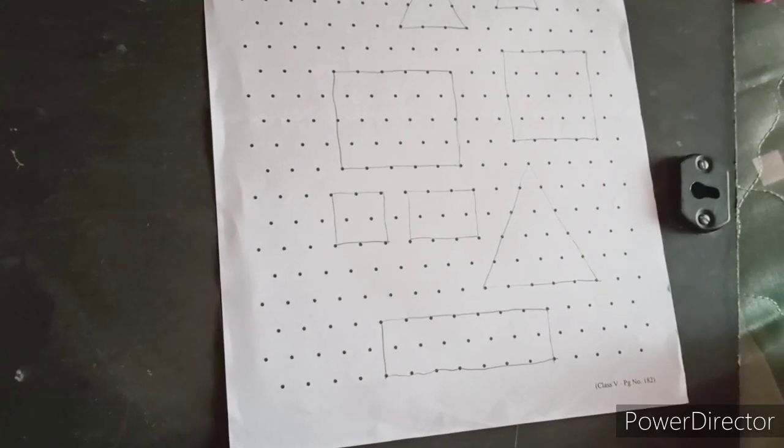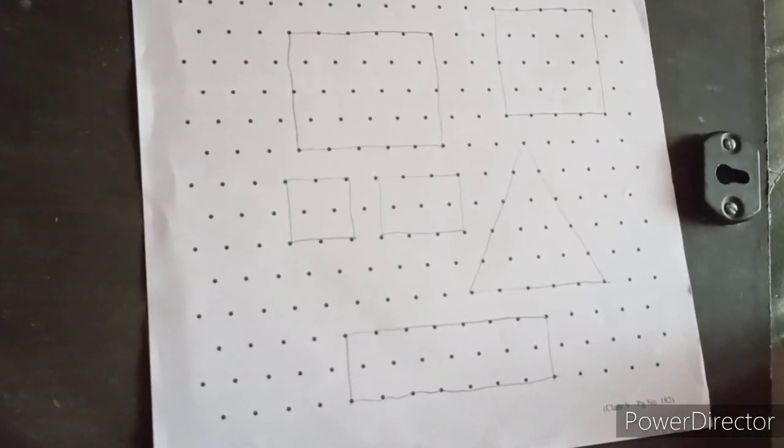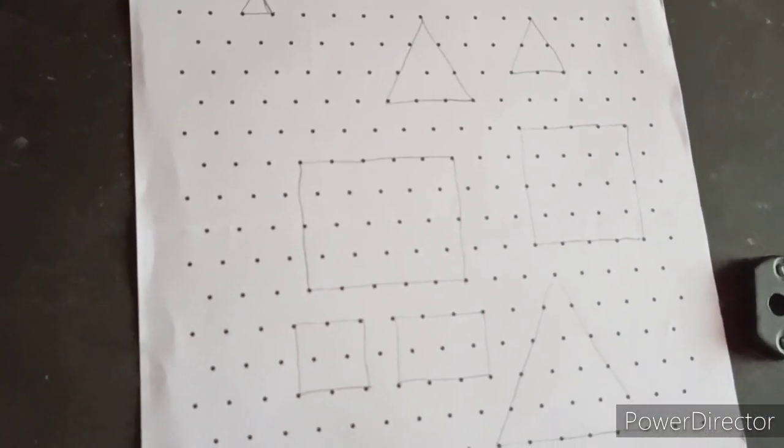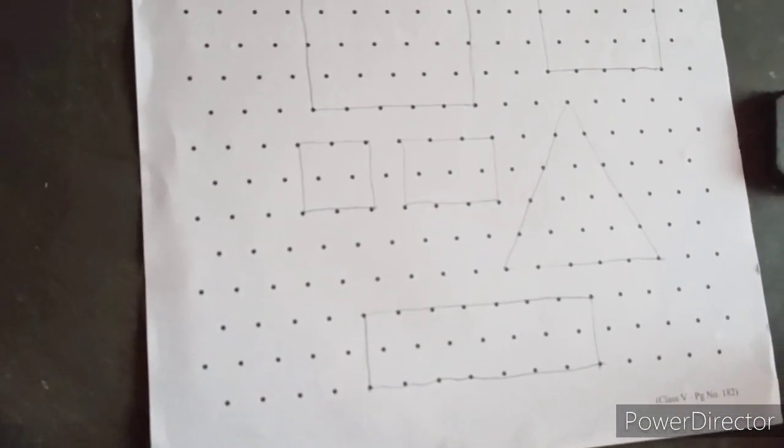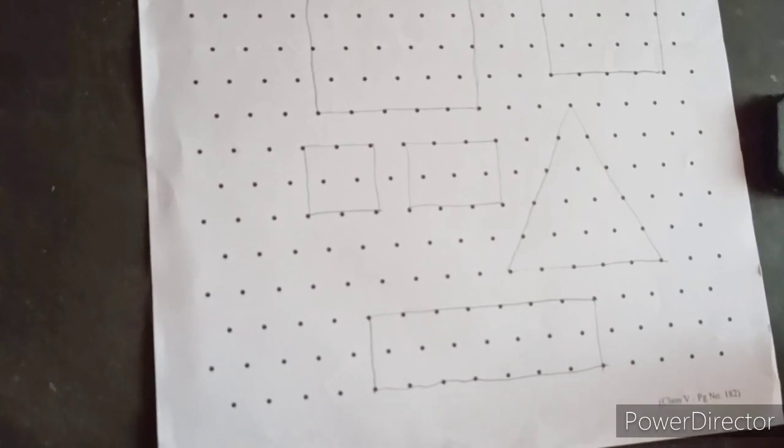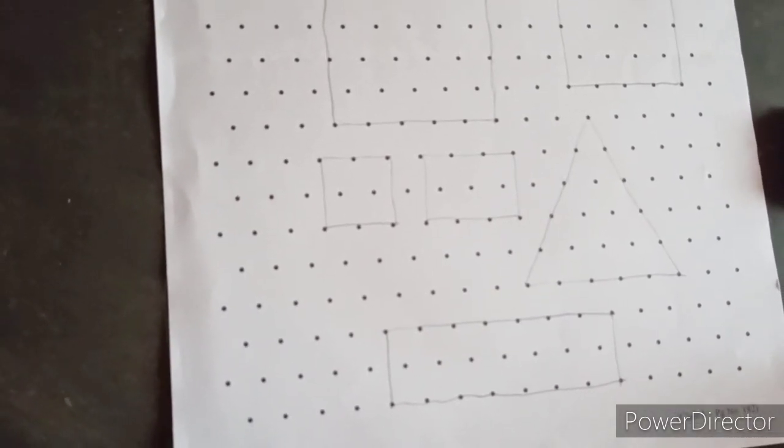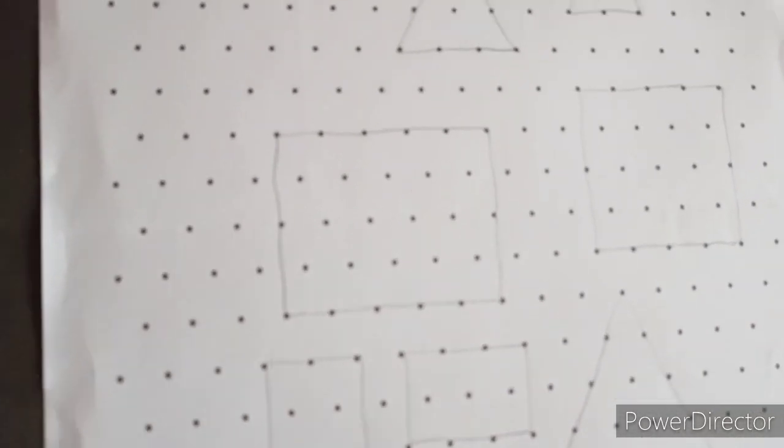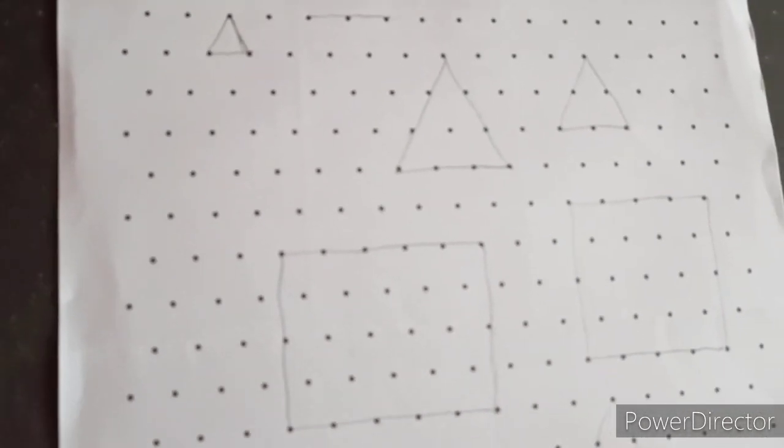So similarly you try to draw a few more. Understood how to draw? So simply you have to join the dots. Just make some shapes, squares, rectangles, triangles like that. And in different sizes you have to draw here.